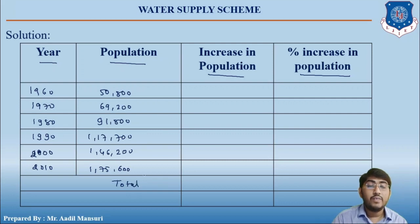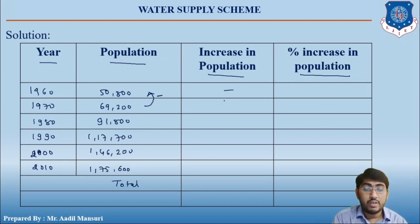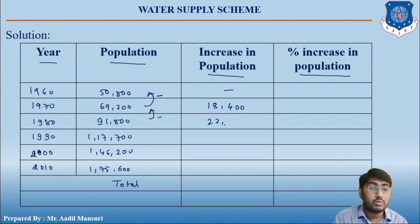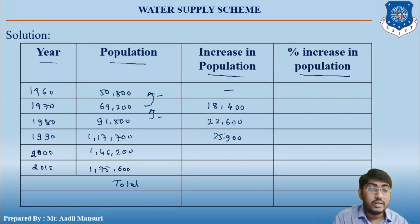For the increase in population: for the first year there is no increase. For the second value: 69,200 minus 50,800 equals 18,400. Then 91,800 minus 69,200 equals 22,600. Similarly, 25,900, then 28,500, then 29,400.